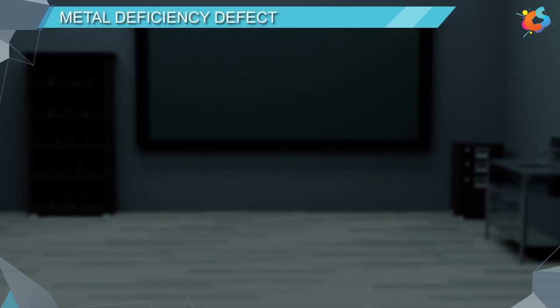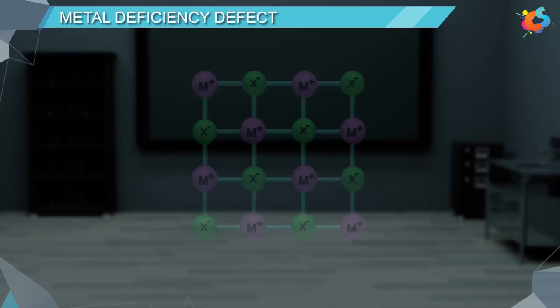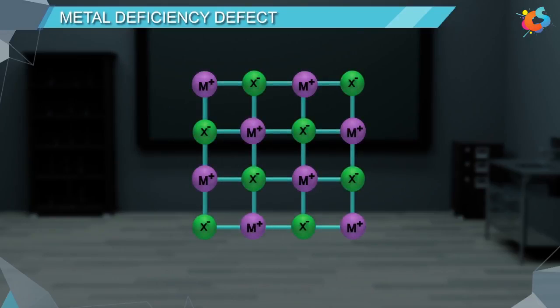Metal deficiency defect. This kind of metal deficiency defect is created when a metal ion goes missing from its original lattice site. To maintain the charge neutrality, the same metal ion having higher positive charge is added to occupy the vacancies created in the crystal. As this metal ion has higher positive charge, it will occupy only some of the sites to balance the overall charge and other sites will be left vacant.